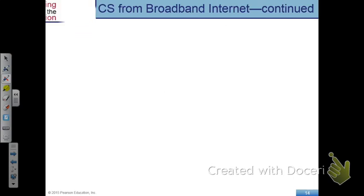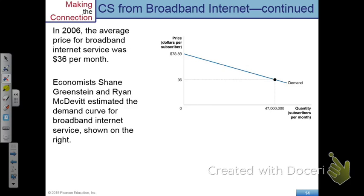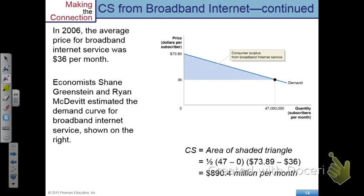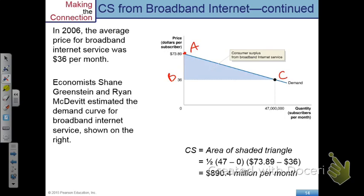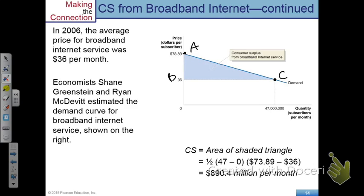Here's an interesting case study: economists collected data on broadband internet and estimated a demand curve, finding points A, B, and C. Knowing these three points, you can literally calculate the area of the consumer surplus using the triangle formula we just showed. Take a moment to verify: 47 minus 0 is the base, and A is 73.89, and B–C is 36, so you calculate A times B.